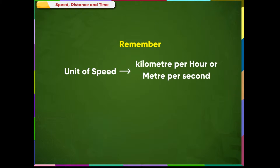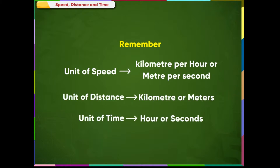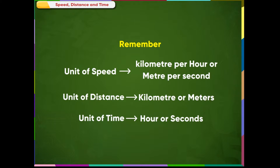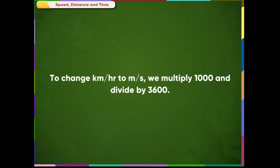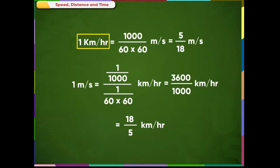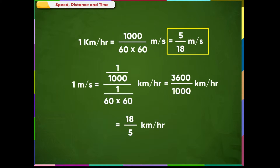Remember, the unit of speed is usually given in km per hour or metres per second. The unit of distance is given in km or metres. The unit of time is given in hours or seconds. The conversion of units is done in the following way: To change km per hour to metres per second, we multiply by 1000 and divide by 3600. So 1 km per hour equals 1000 divided by 3600 metres per second.